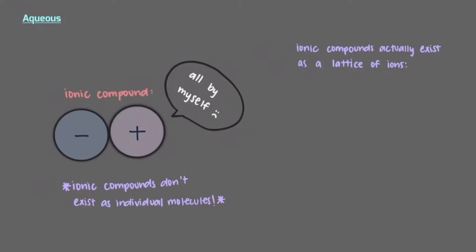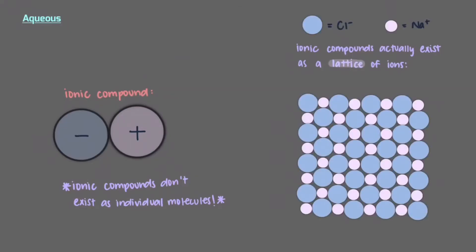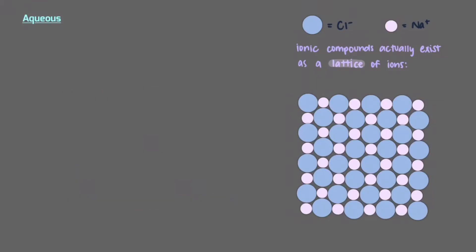Ionic compounds actually exist as a lattice of ions. Let's take sodium chloride for example. We see here that sodium and chloride ions alternate and repeat to form sodium chloride. Therefore, writing NaCl tells us the ratio of sodium ions to chloride ions in an ionic compound. There is one sodium ion for every chloride ion.